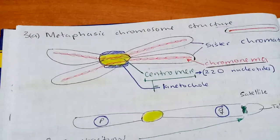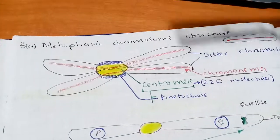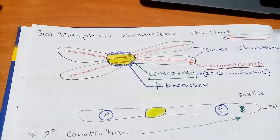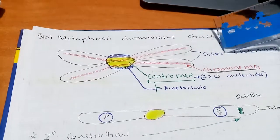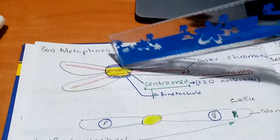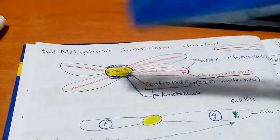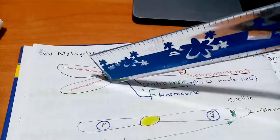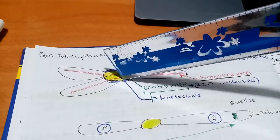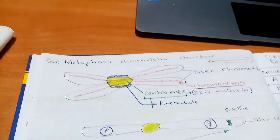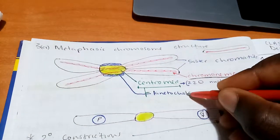Let's look at the metaphase chromosome structure — the structure of a chromosome during metaphase. During metaphase, the DNA has already replicated. The chromosome contains two chromatids, called sister chromatids, held together at a point called the centromere. On this region, we have a stack of proteins where the mitotic spindle will attach, called the kinetochore.